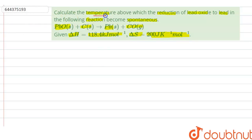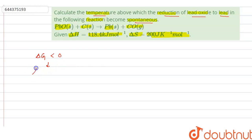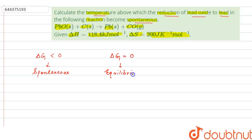In this question, we have to calculate the temperature above which the reduction of lead oxide to lead in the reaction becomes spontaneous. We know that for a spontaneous reaction, delta G should be negative — it should be less than 0. When delta G is equal to 0, the reaction is at equilibrium. And when delta G is greater than 0, the reaction is non-spontaneous.